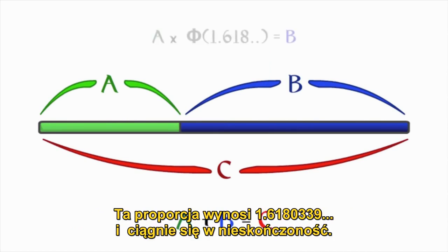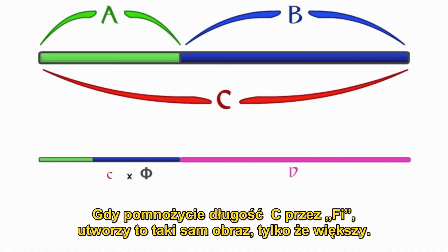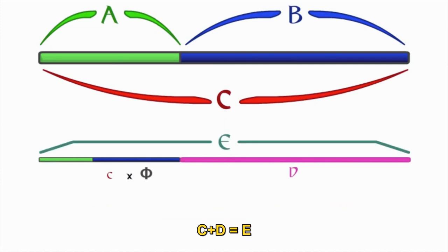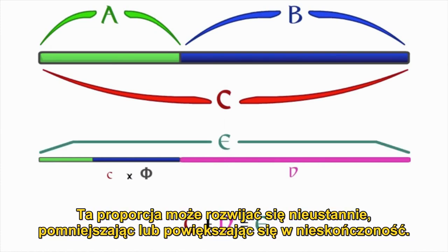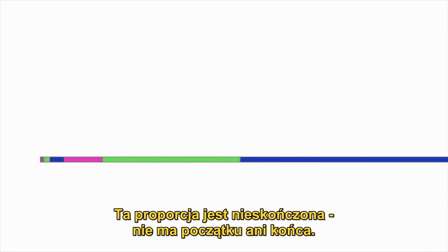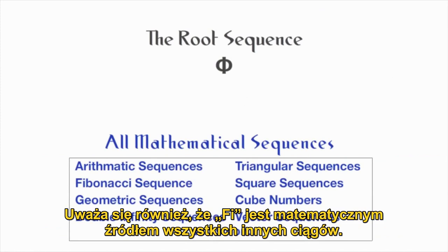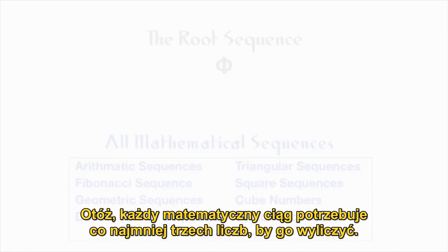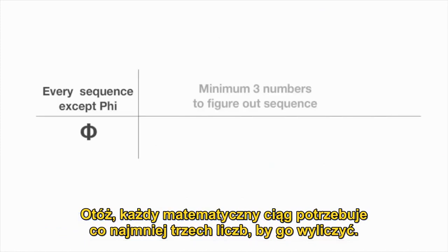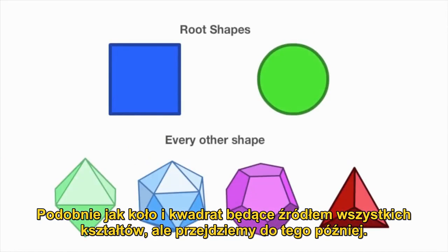This ratio is 1.6180339 and continues on forever. If you multiply the length of C with Phi, it will create the exact same image, only bigger. C and B is equal to E. This ratio could then span on forever, going smaller and smaller or bigger and bigger. It is infinite — it has no beginning and no end. It is also believed that Phi is the mathematical root of all other sequences. Every mathematical sequence in existence needs a minimum of three numbers to figure out the sequence, but Phi only needs two. It is the only one, similar to how the circle and square are the source of all shape.